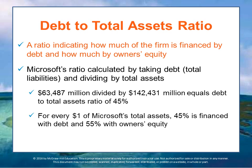The debt-to-total-assets ratio indicates how much of the firm is financed by debt and how much is financed by owner's equity. To find Microsoft's total debt, you must add current liabilities to long-term liabilities, long-term debt, and other liabilities. The total debt-to-assets ratio is total liabilities of $63.4 billion divided by total assets of $142 billion, for a ratio of 45%. For every dollar of Microsoft's total assets, 45% is financed with debt and the remaining 55% is provided by owner's equity.